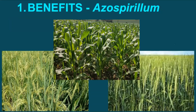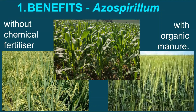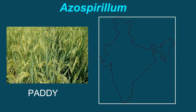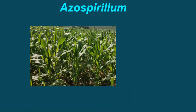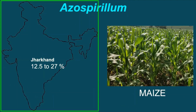However, the effect on paddy, maize, and wheat is worth mentioning. Percentage of yield increases when biofertilizers are applied along with manure. When applied to paddy, the yield increase ranged from 9–13% in Punjab and 12–28% in Jharkhand. In case of maize, yield increased by up to 27% in Jharkhand while it was 22% in Rajasthan.